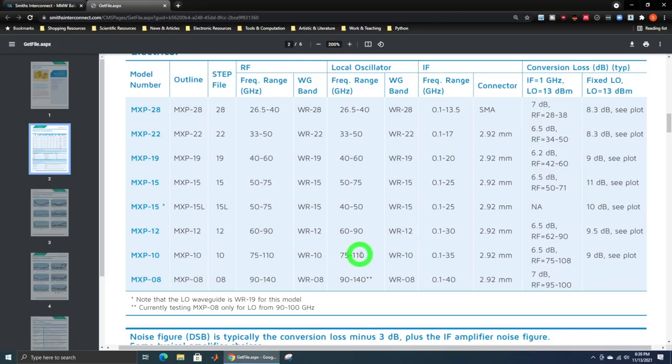Now, the LO frequency and the RF frequency can be anywhere from 75 to 110 gigahertz, and of course, that means that a certain IF will land at a particular frequency. Now, they do have reasonably good conversion loss, and the LO requirement is 13 dBm, so the LO is at the same frequency as the RF or very close to it. We're looking at a loss of about 6.5 dB or 9 dB or so, and the noise figure is about 3 dB less than that.